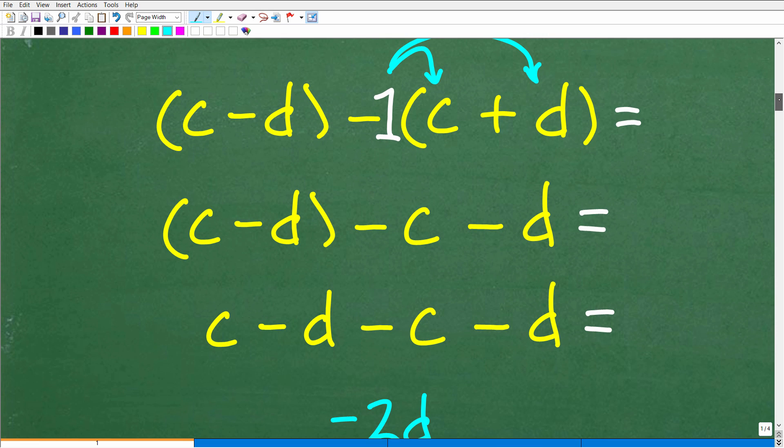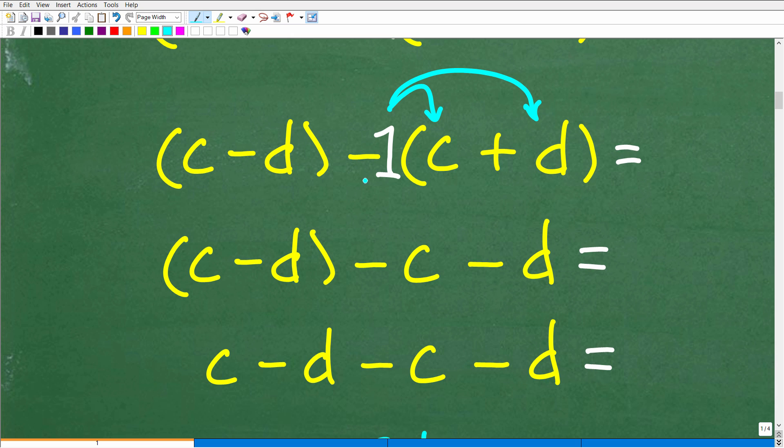Now we're going to go really careful here because we're dealing with these negative signs. So it's going to be negative one times C. We're going to distribute that negative one. Negative one times C is going to be negative one C or negative C. That is a negative one C, but I'll just drop that one from writing it. So now I have this negative one times D. Negative one times D is negative D or negative one D. I'll just write that as negative D.